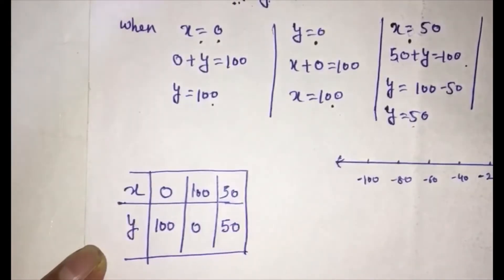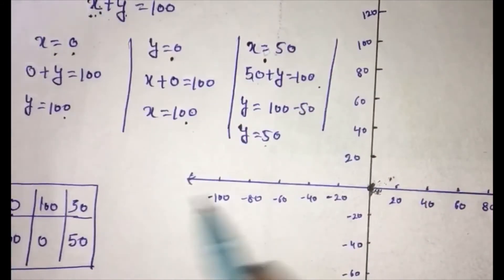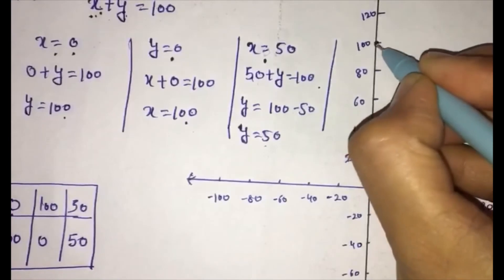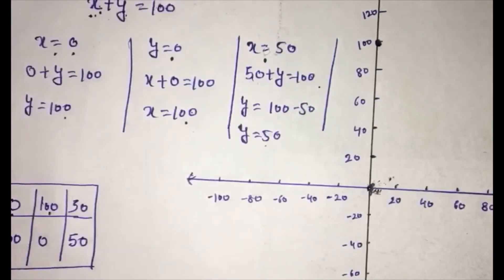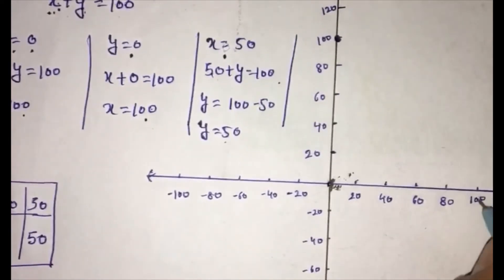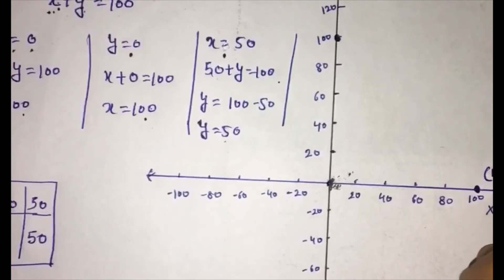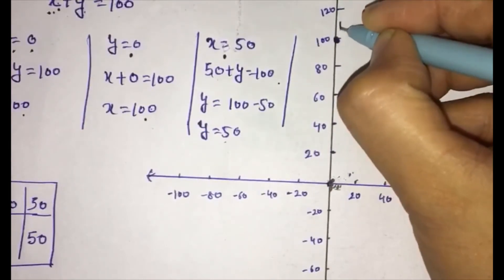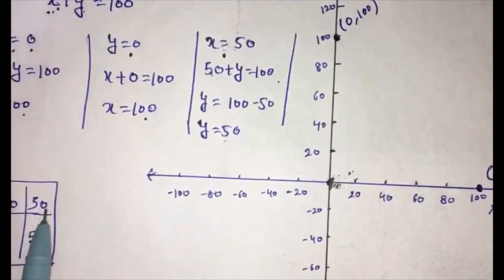Now we need to draw this on the graph. Looking at the given graph, we will plot the points. First point: X is 0 and Y is 100 — that is the origin side on Y-axis. Second point: X is 100 and Y is 0. Third point: X is 50 and Y is 50.